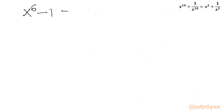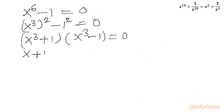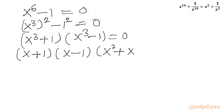Now I will consider the second equation x^6 - 1 = 0. I can write this as (x^3)^2 - 1^2 = 0, giving (x^3 + 1)(x^3 - 1) = 0. Applying the sum and difference of cubes identities: (x + 1)(x^2 - x + 1)(x - 1)(x^2 + x + 1) = 0.